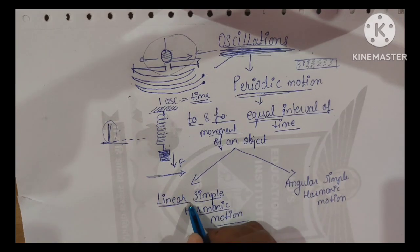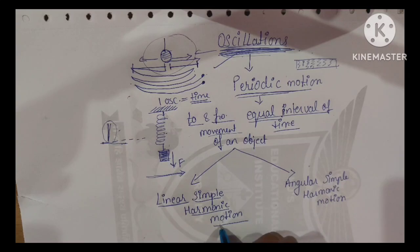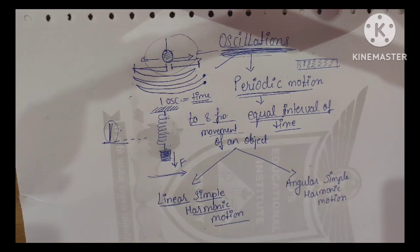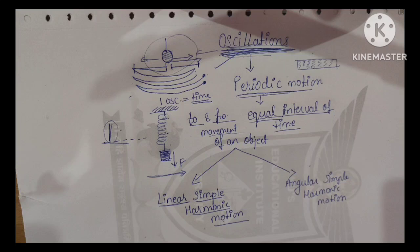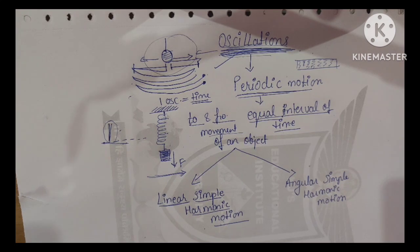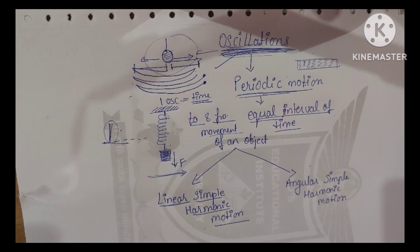This is called linear simple harmonic motion. Linear simple harmonic motion is defined as the linear periodic motion of a body in which the restoring force is always directed towards the mean position, and its magnitude is directly proportional to the displacement from the mean position.